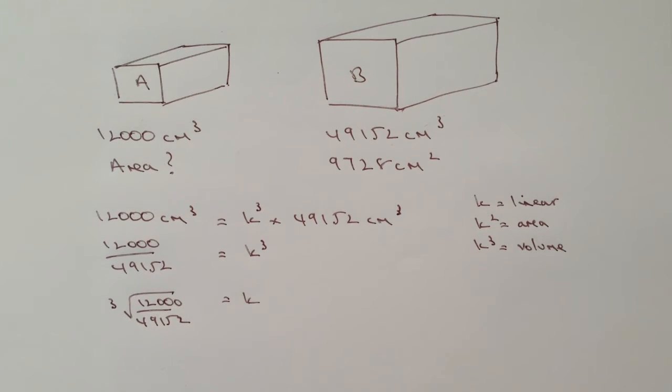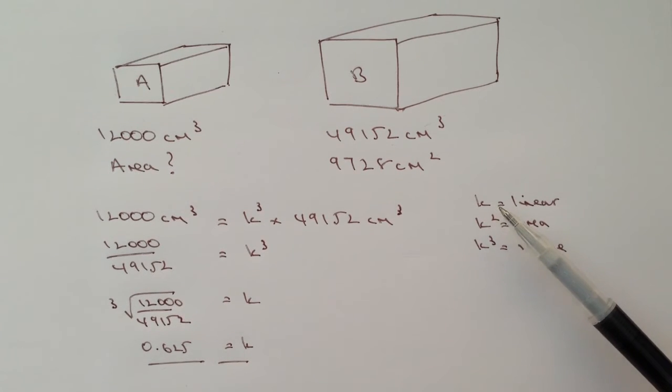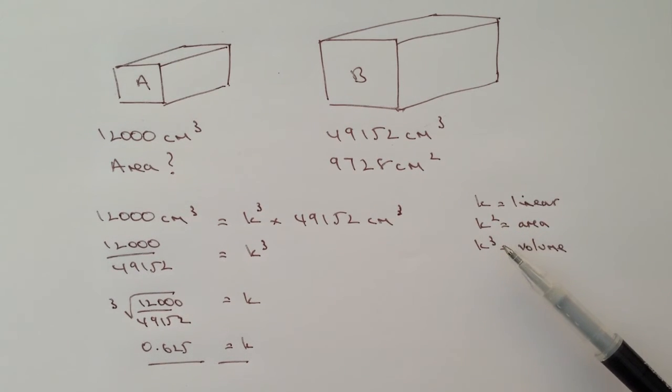What you'll find is that that will work out quite neatly to K being 0.625, so we've found now the linear relationship K, and we can use that either as we have done as K cubed or we can use it as K squared, which is what we're going to use now because we're being asked to find out the area.